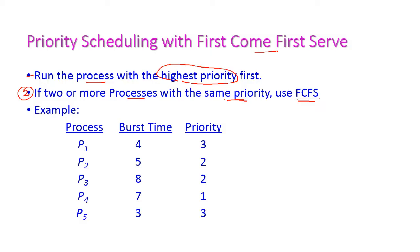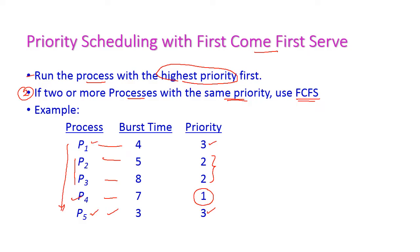Let us see one example. Here we are having five different processes and the corresponding burst time is also given. When it comes to priority, the first priority is allocated to process 4, and the second priority is allocated for process 2 and 3. The priority 3 is allocated for two processes P1 and P5. Now let us see how to solve this problem using priority scheduling with the first come first serve scheduling algorithm.